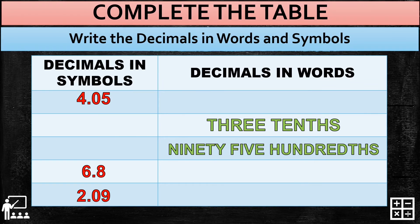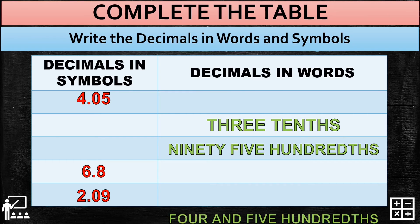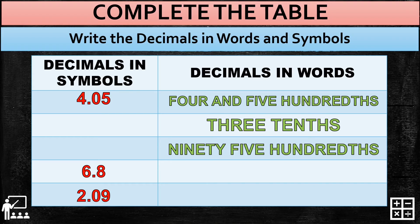Let's complete a table by writing the decimal in words and in symbol. I'm going to show you examples one and two, and you're going to answer three, four, and five. Four point zero five in words is 'four and five hundredths' — four is the whole number part, 'and' represents the decimal point, and five hundredths because five is the last decimal digit with a place value of hundredths. Next, three tenths written in symbol is zero point three — we don't use 'and' since there is no whole number part.